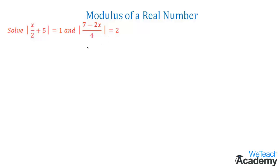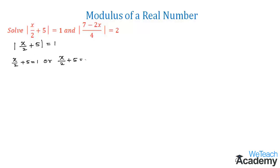Let us write the first equation: mod(x/2 + 5) = 1. The expression inside the modulus can be positive or negative, so we get two cases: x/2 + 5 = 1, or x/2 + 5 = -1.